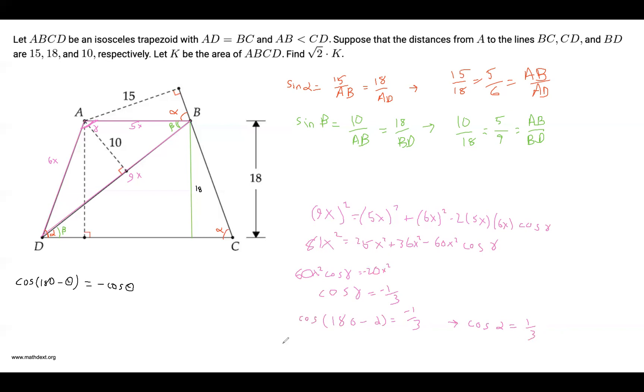And since cosine squared of alpha plus sine squared of alpha is 1 by the Pythagorean identity, and since alpha is actually an acute angle, we get sine of alpha is square root of 1 minus 1 third squared, which is 2 root 2 over 3.